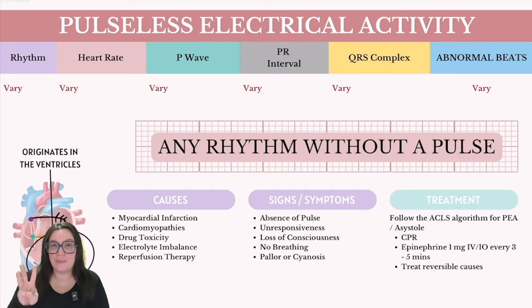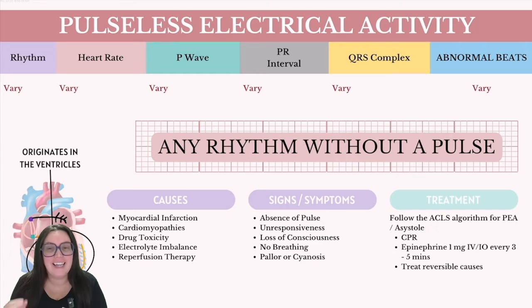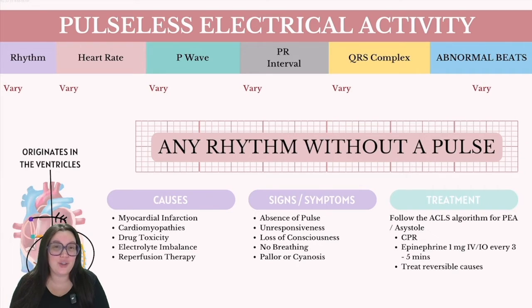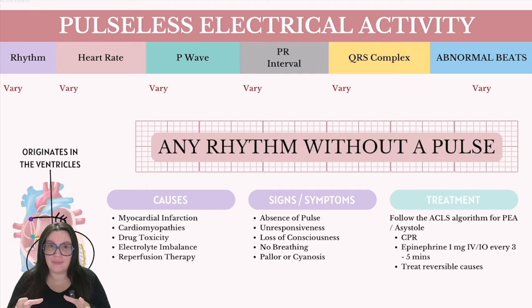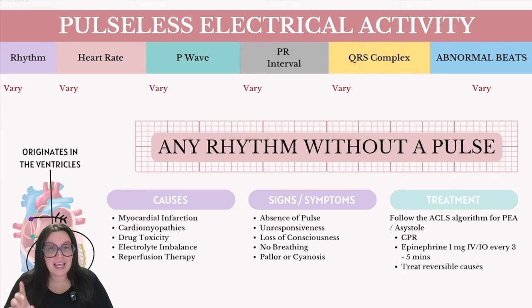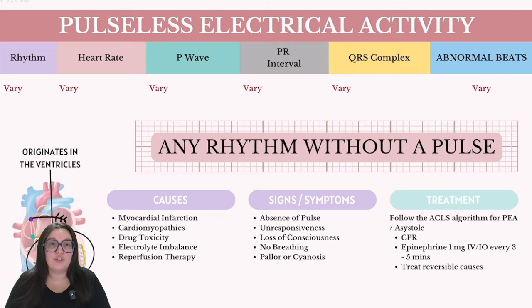There is actually a fourth lethal rhythm, though not commonly talked about: pulseless electrical activity, or PEA. It's characterized by organized electrical activity on the ECG without any corresponding mechanical heart contractions — hence no detectable pulse. With PEA, there's not a single specific rhythm; it can be any rhythm, even normal sinus rhythm. The big key is that you're going to see electrical activity on the screen, but that electrical activity does not mean mechanical activity is taking place. Electricity does not mean mechanical activity.